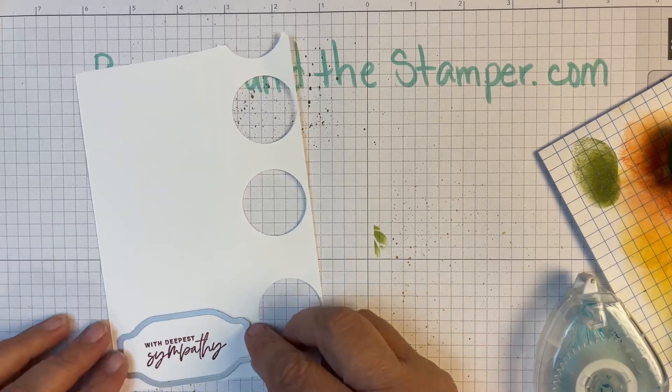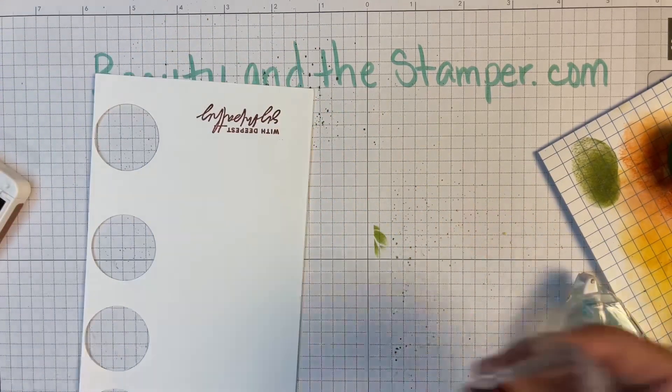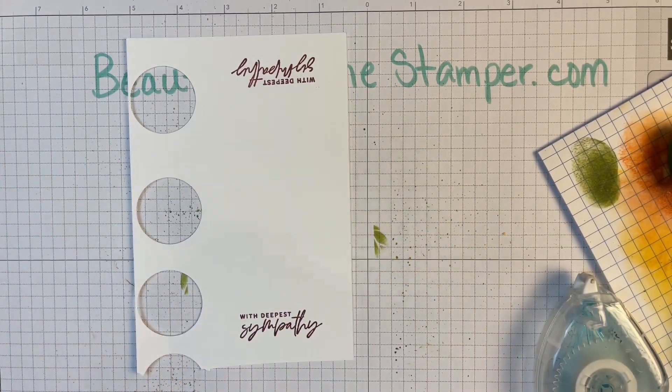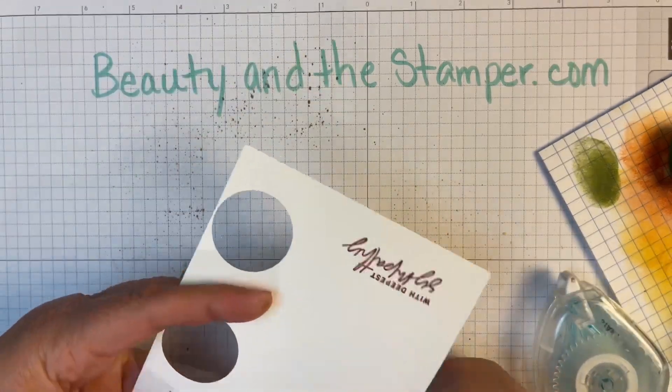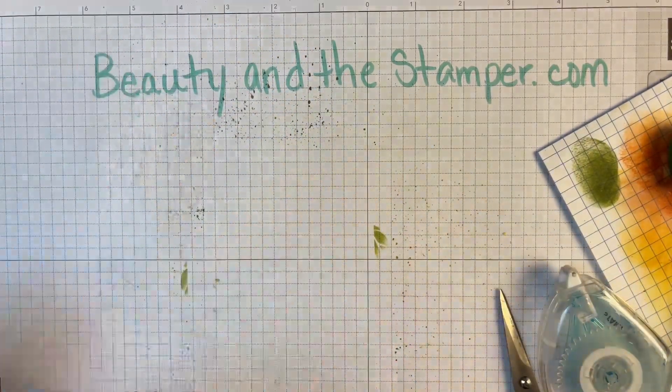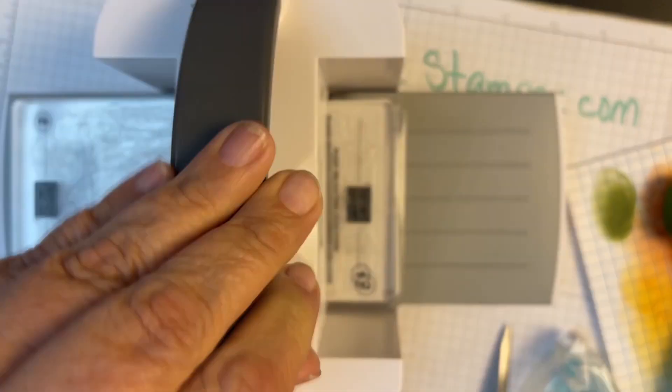It's for a friend of mine whose husband was like an uncle to me, one of my dad's really good friends. So I'm going to stamp the sympathy and then I'm going to use the die. This makes a perfect shape for this card, so I think it'll go really nicely.